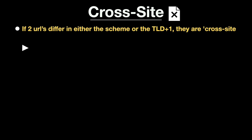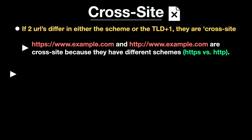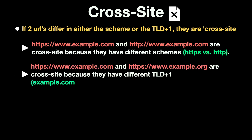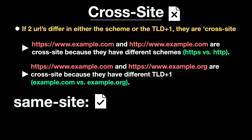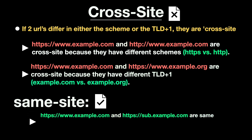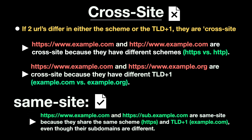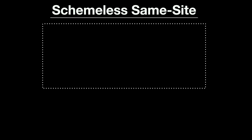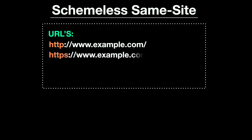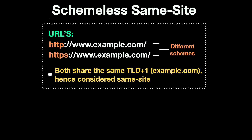So, https://www.example.com and http://www.example.com are cross-site because the schemes are different. But https://www.example.com and https://sub.example.com are same-site, even though the subdomains are different. Apart from that, there is also the concept of schemeless same-site, which used to be the standard before schemes were included in the definition. In schemeless same-site, only the TLD+1 matters, so http://www.example.com and https://www.example.com would be considered the same. But now, with the inclusion of schemes, these are treated as cross-site.